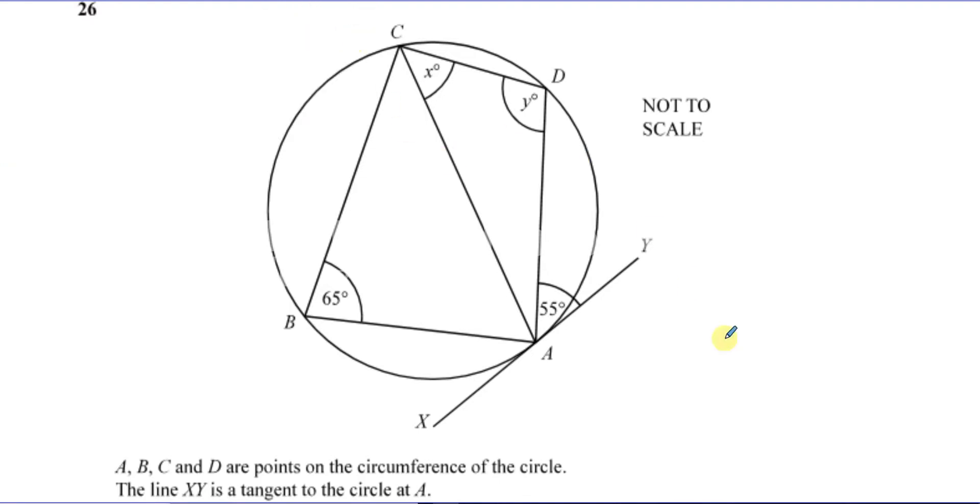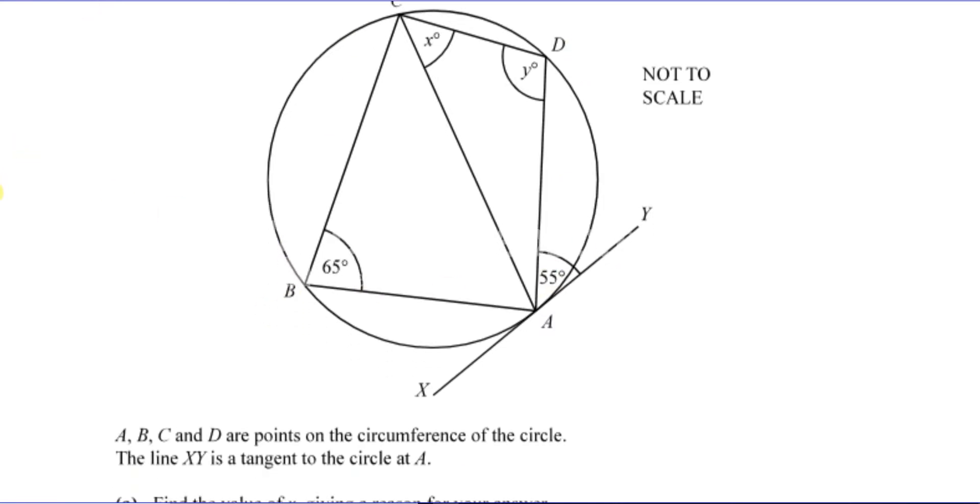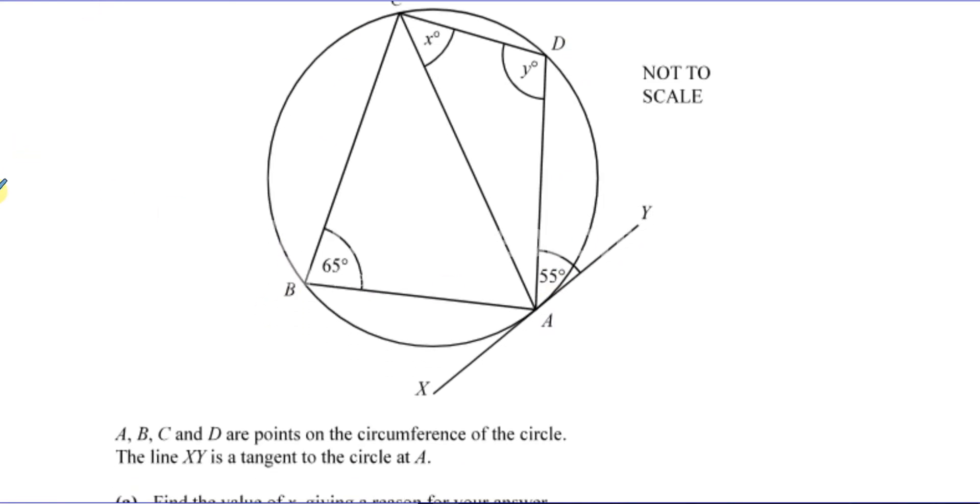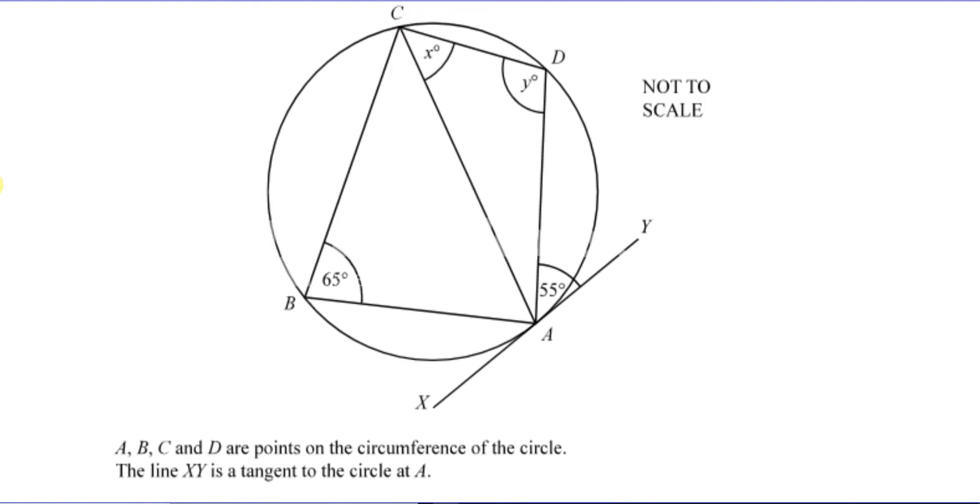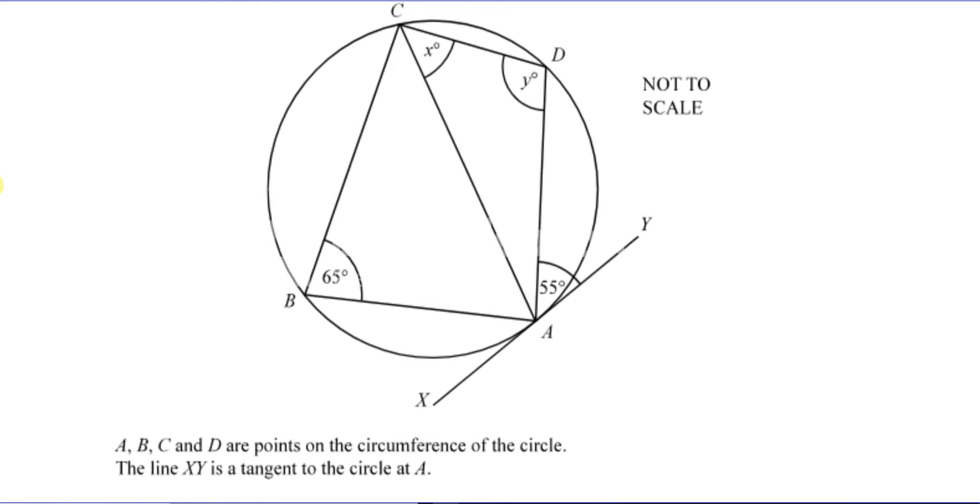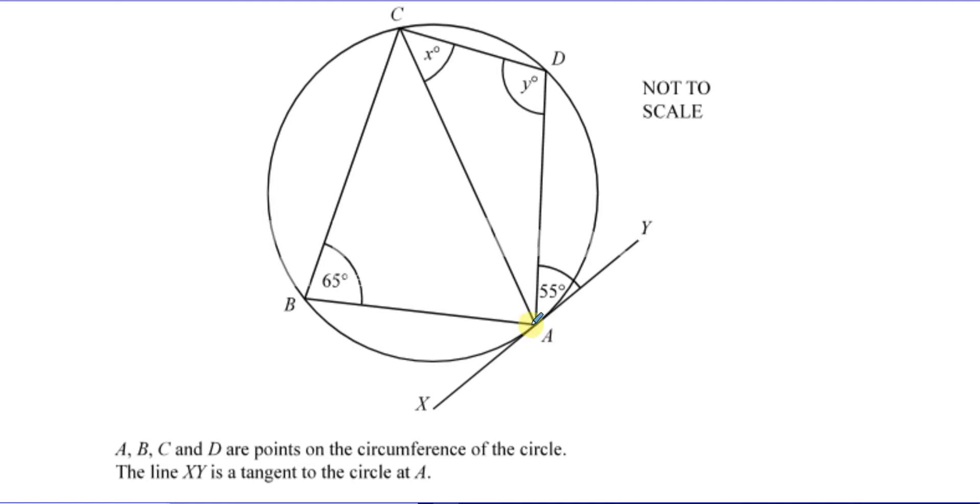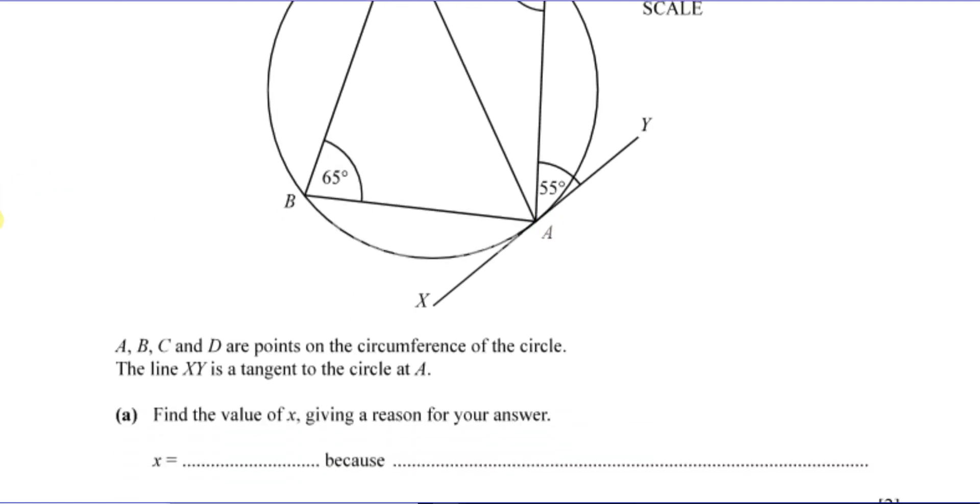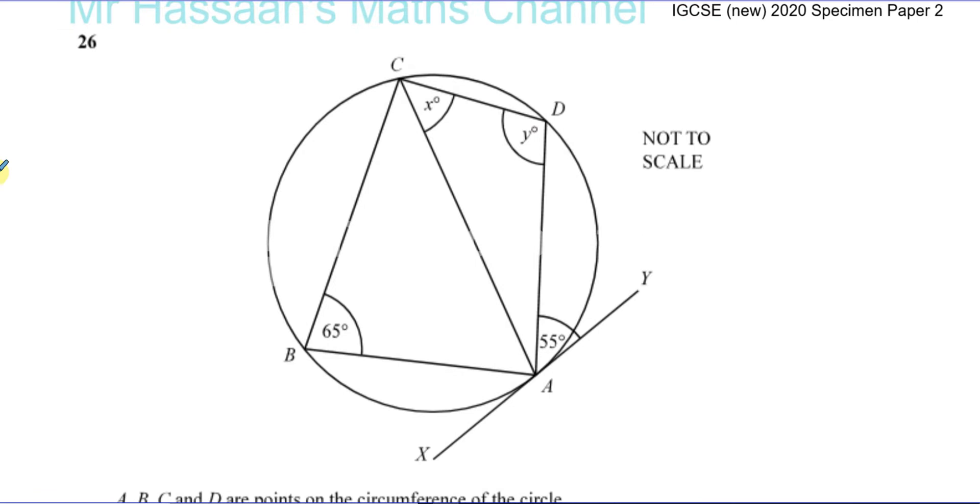Now this is a question here. We got to find the value of X and Y. It says A, B, C and D are all on the circumference of the circle. So this is called a cyclic quadrilateral, which should trigger some facts in your mind about angles in circles. It says XY is a tangent to the circle at A. And it says find the value of X, giving a reason for your answer.